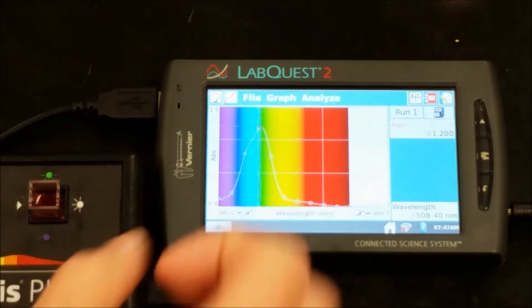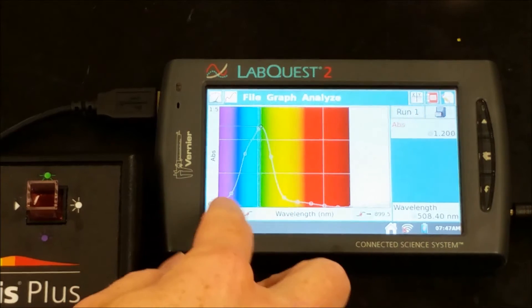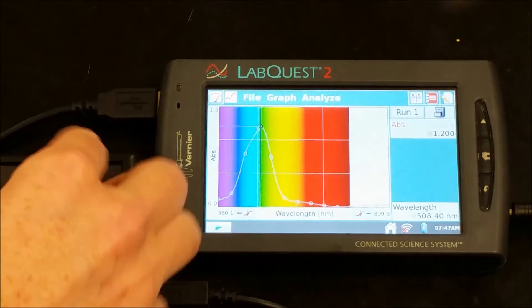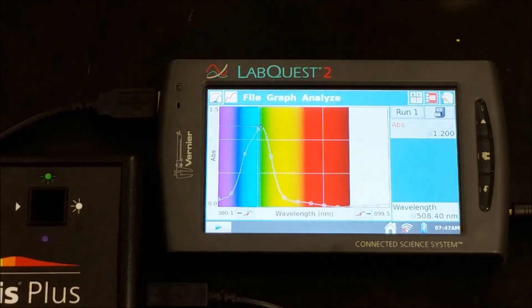We're seeing a lot of green being absorbed, a lot of blue being absorbed, a little bit of violet, and then mostly red, orange, and violet are getting transmitted through the solution.